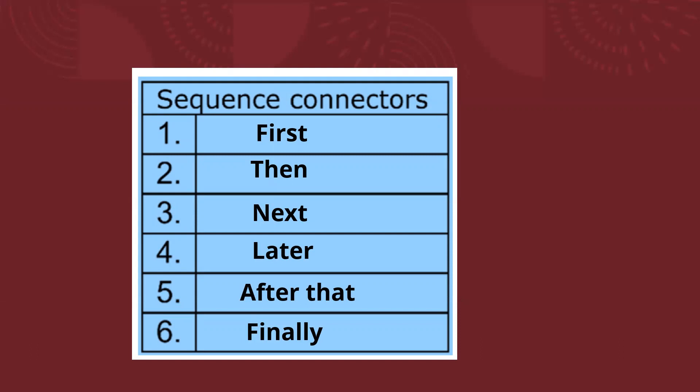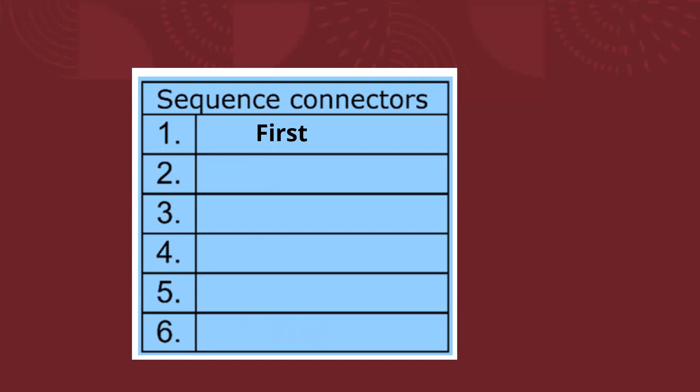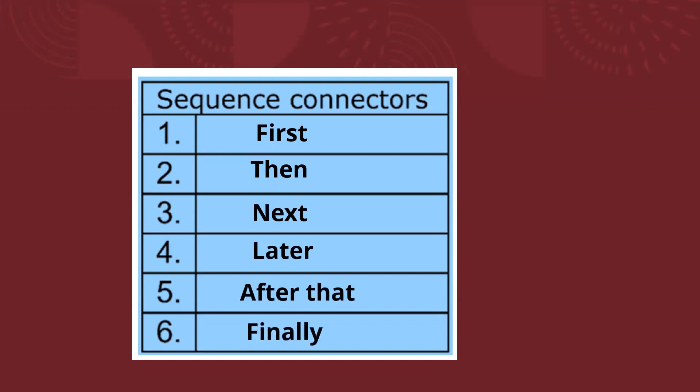Chicos, los conectores de secuencia nos sirven para indicar los pasos. ¿Qué pasó primero? First, después, enseguida, después, después de eso, y finalmente. First, then, next, later, after that, and finally.